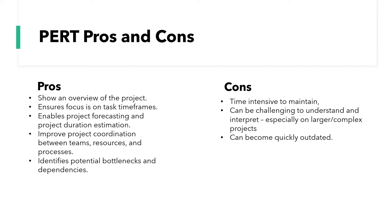The cons: PERT charts can be time-intensive to maintain, even from the initial setup. Things change — tasks change, durations change — and every time that happens you need to update the chart. They can be challenging to understand and interpret, especially on larger or more complex projects where they can get very heavy and difficult to follow. More detail makes them more useful, but that comes at a cost. They can also become quickly outdated, particularly on fast-moving projects, so you'll need to keep an eye on them and update them regularly, which again is time-intensive.